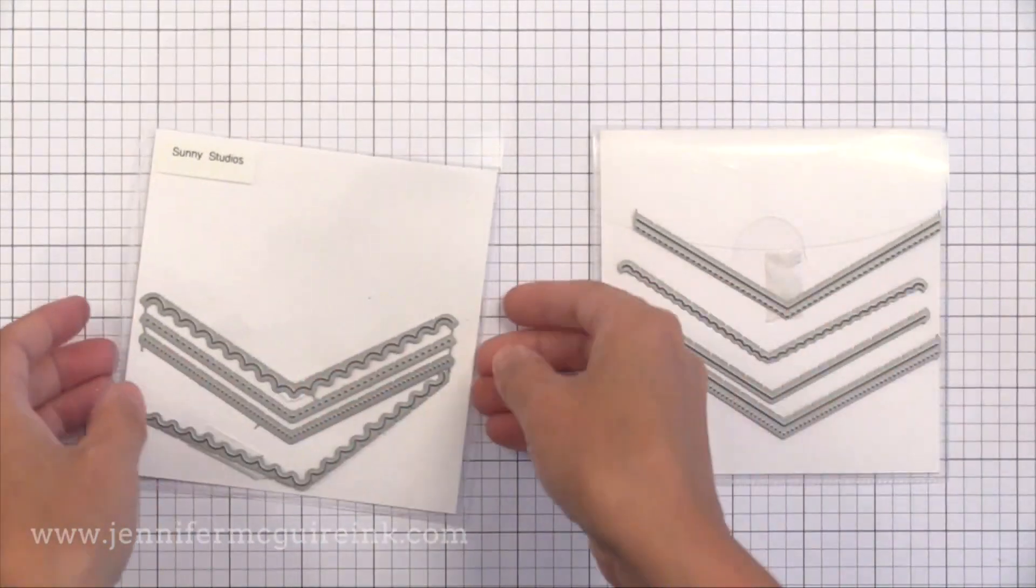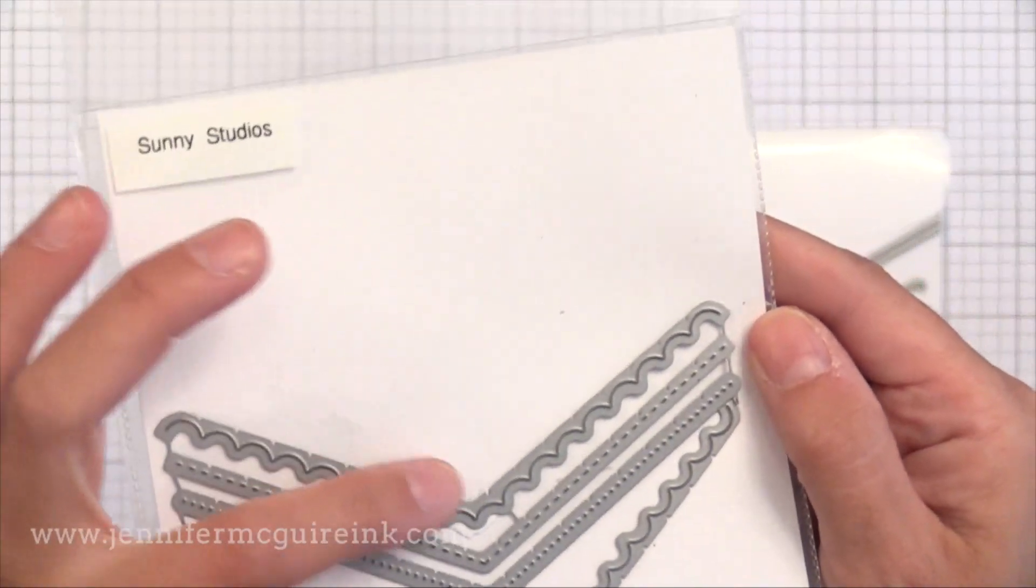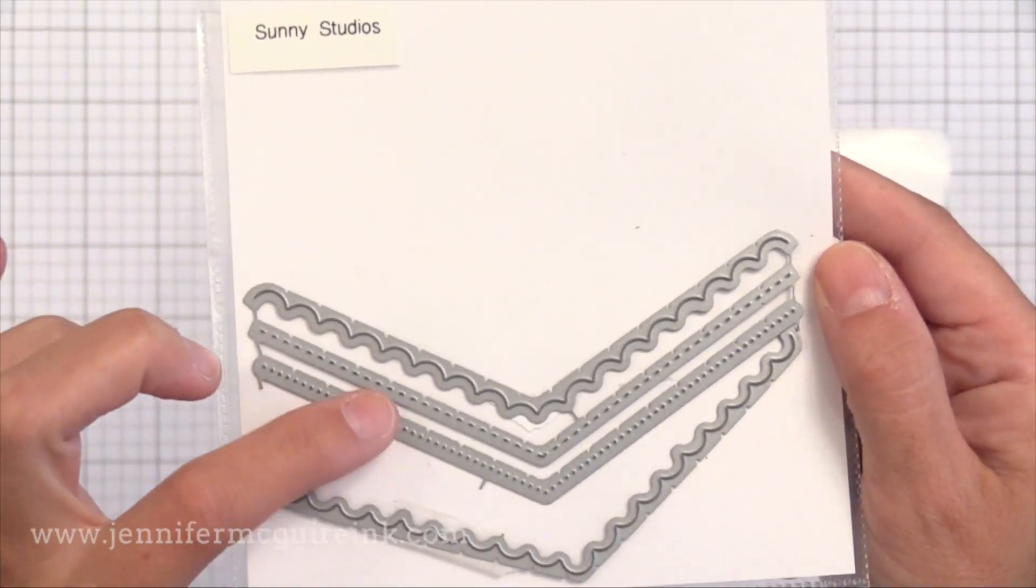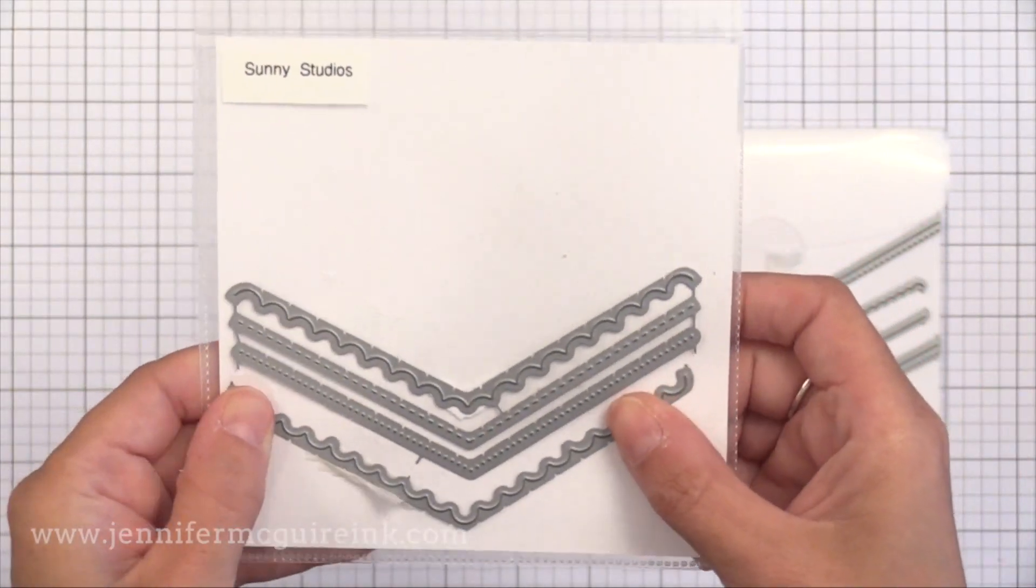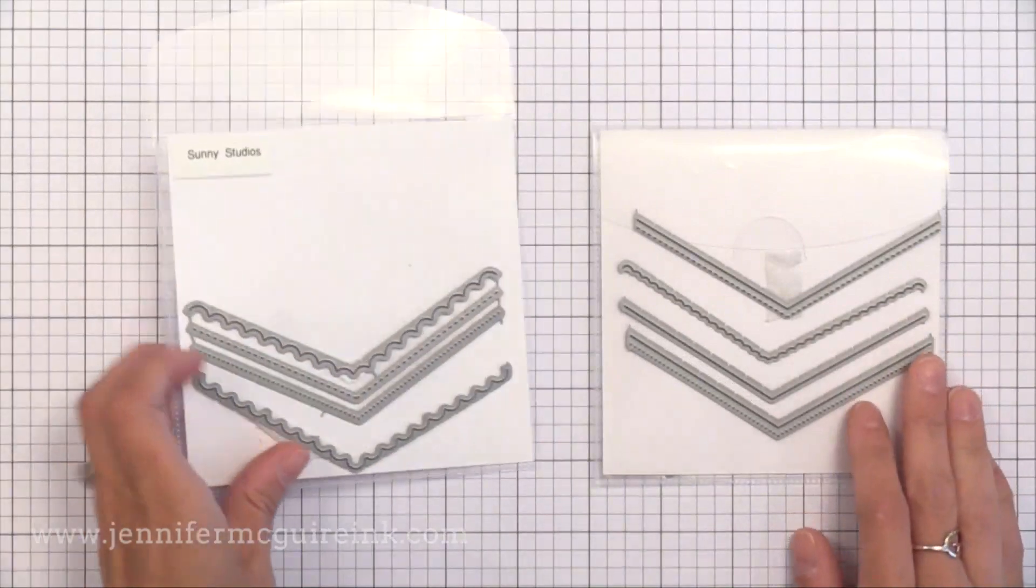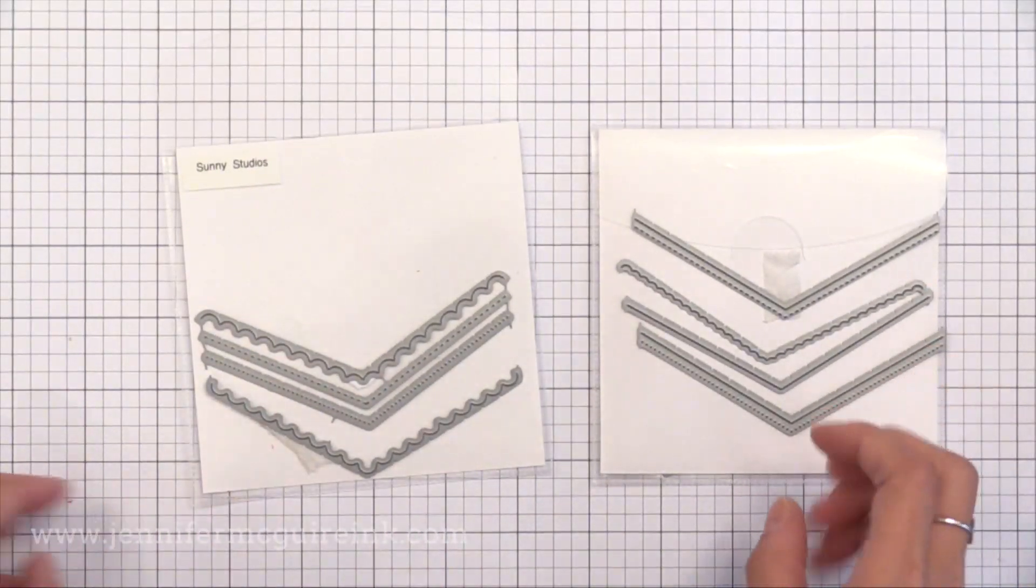Now they recently have come out with another set similar but this does two scallop edges and then the other two just do faux stitching and faux piercing. So I'm really excited about this set and I wanted to use that today. But keep in mind you could use any border die and I'll show you that in a little bit.